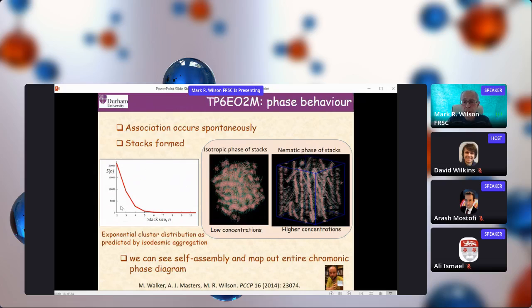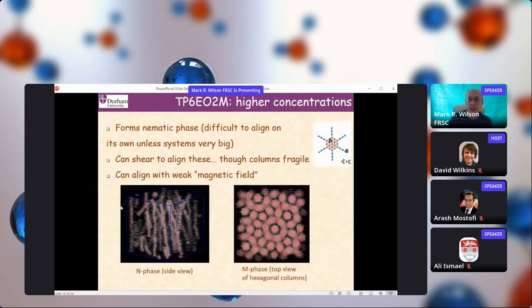This is what happens if you attempt to simulate the entire chromonic phase using DPD. In an isotropic phase, we get this whole range of different stacks, which down to a dimer, follow an isodesmic self-assembly behavior where you get this exponential fall-off in stack sizes. As you push this to higher concentrations, eventually our stacks become longer. As our stacks become longer, they will spontaneously align and you get the formation of nematic phases. In fact, if we push this to much higher concentrations, you can even see the M phase that forms at very high concentrations where stacks start to pack in a hexagonal arrangement.